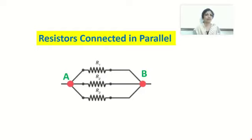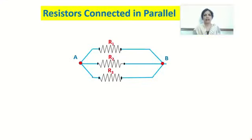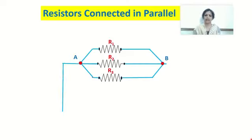We need to understand what is the effect of electric current and potential difference in an electrical circuit when resistors are connected in parallel. Let's first find out how an electrical circuit can be drawn with three resistors connected in parallel. This is the combination of three resistors connected in parallel between the two points A and B.